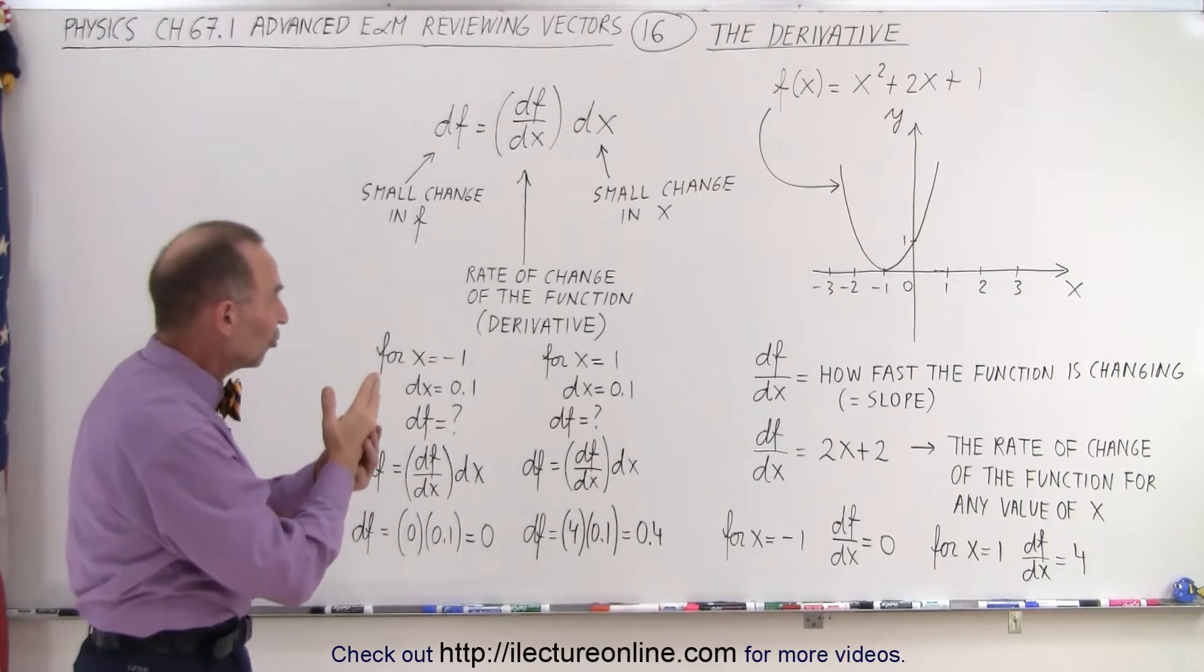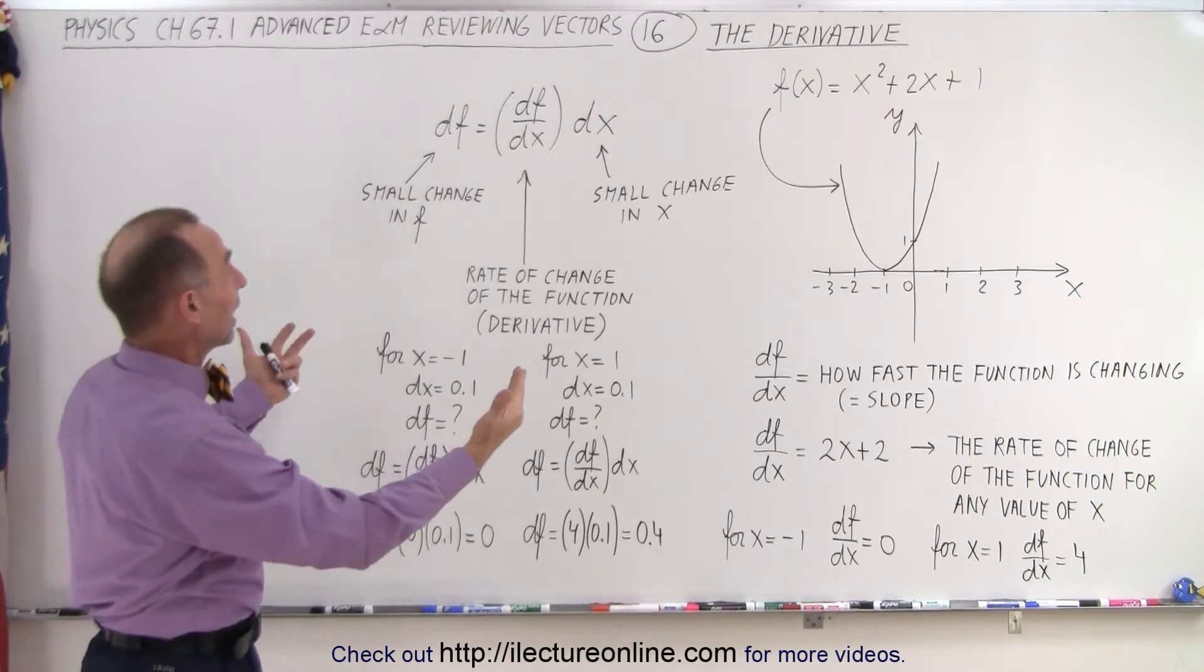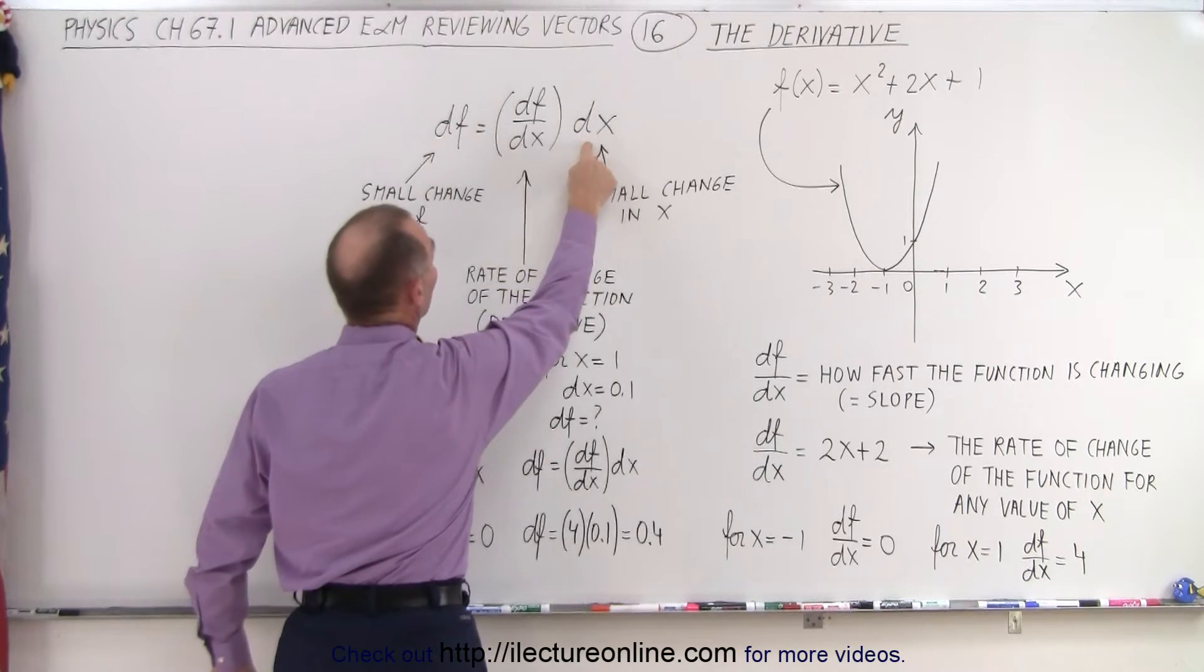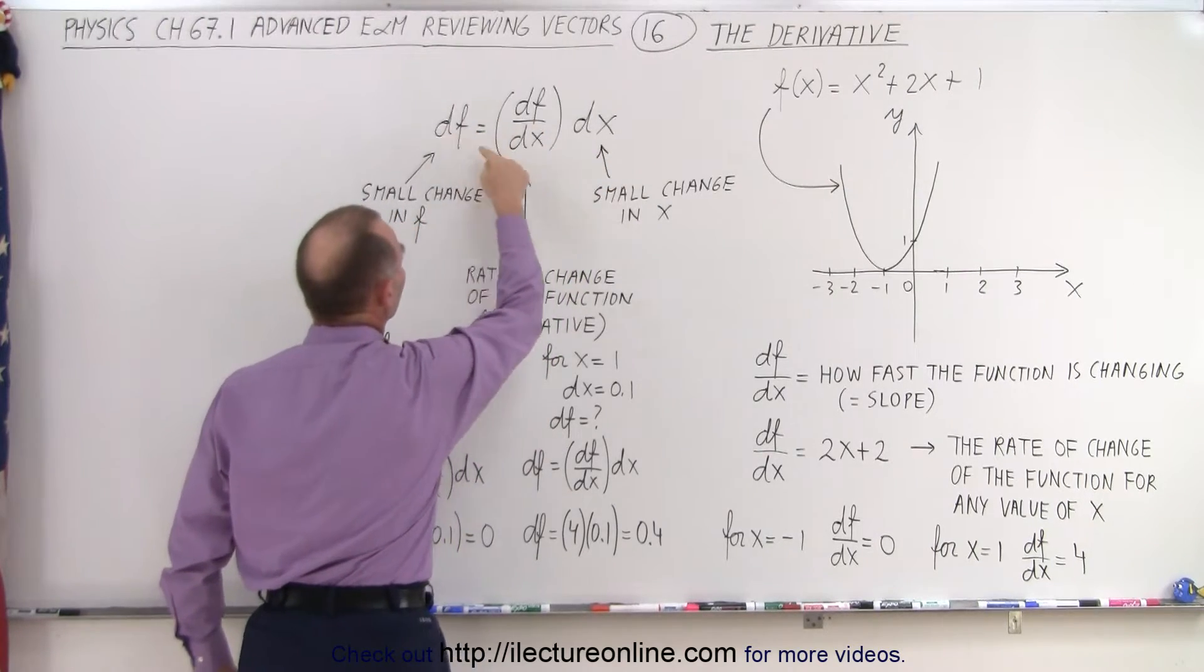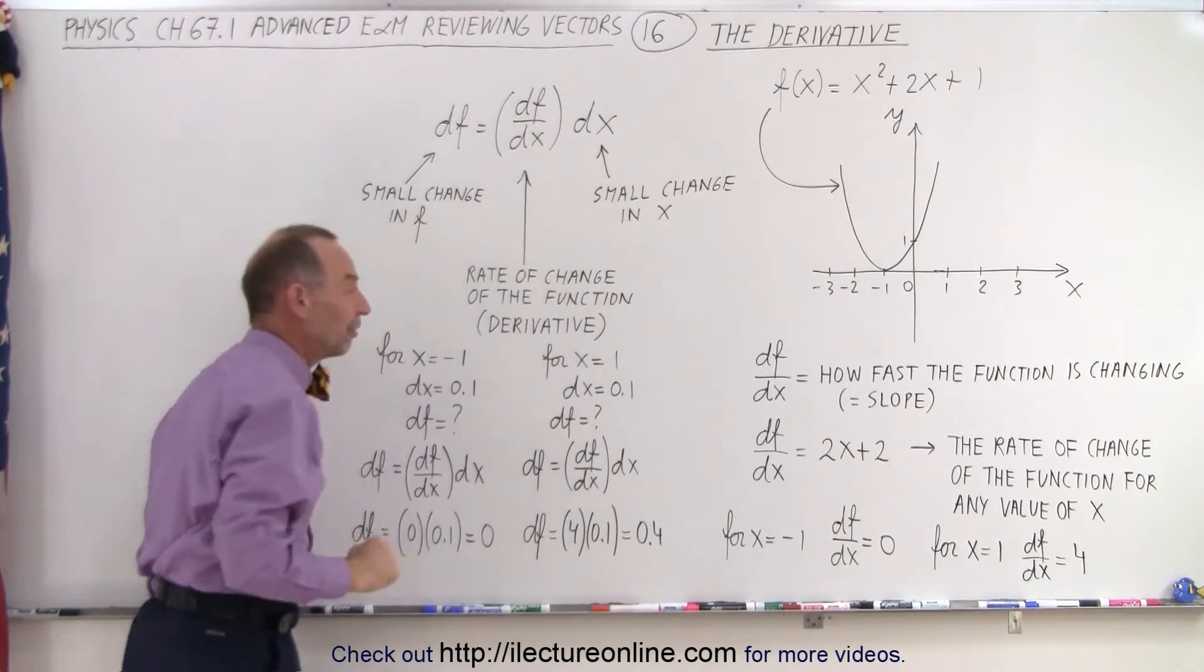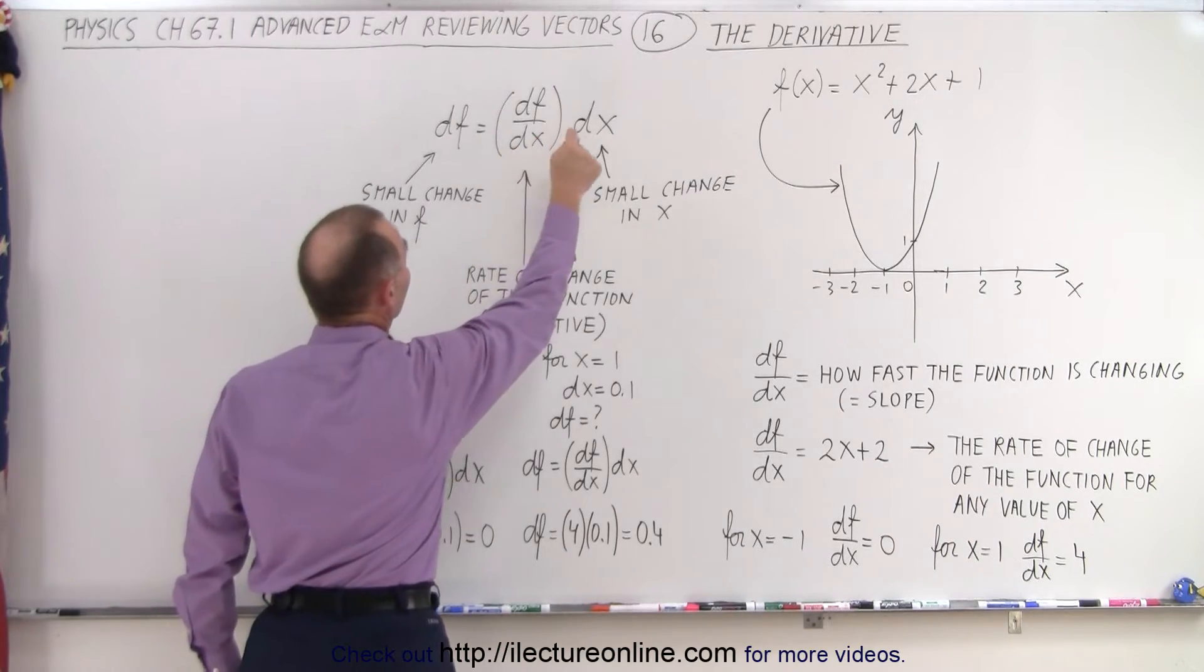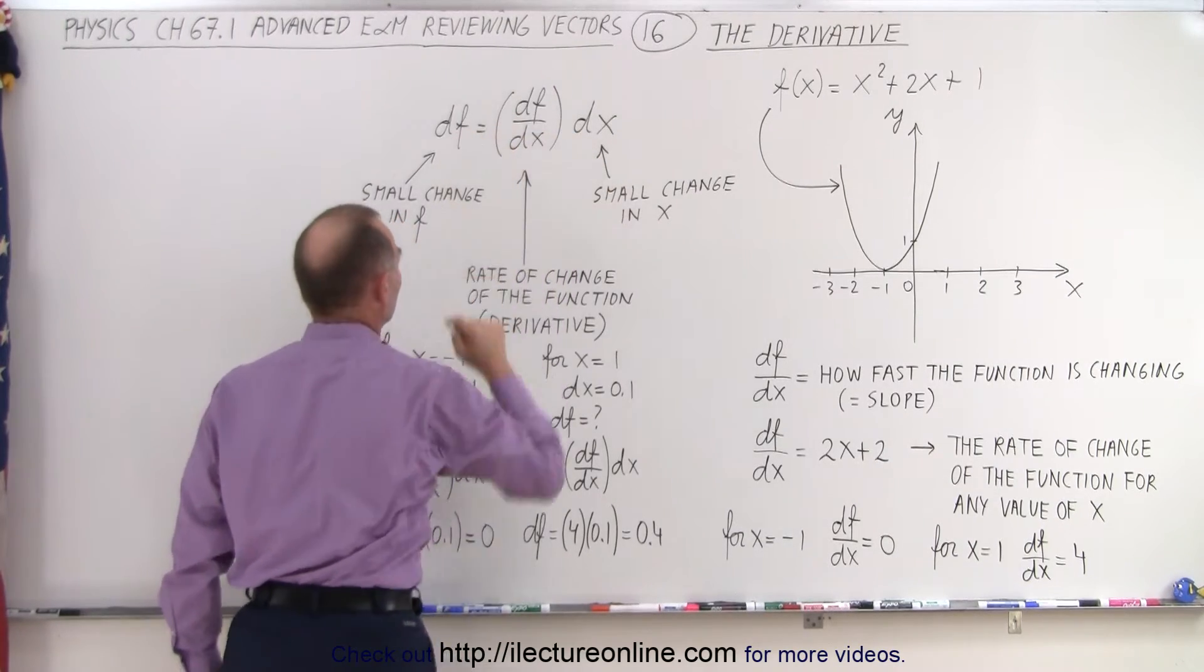It doesn't have to be a change that goes all the way to 0. I know by definition it is, but we can simply look at it. A small change in x will cause a small change in f, depending upon this factor right here. This factor here, df/dx, is the rate of change of the function, or the derivative. So when we multiply the derivative times a small change in x, we get a small change in a function.